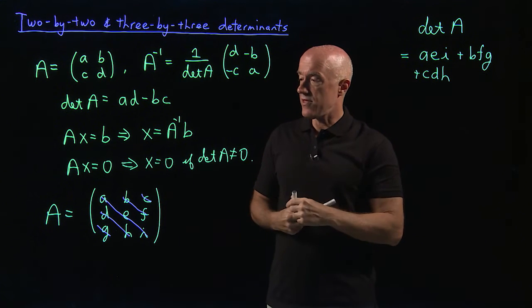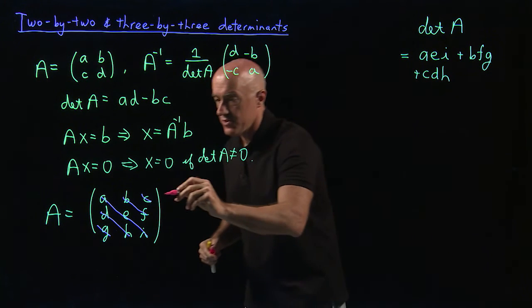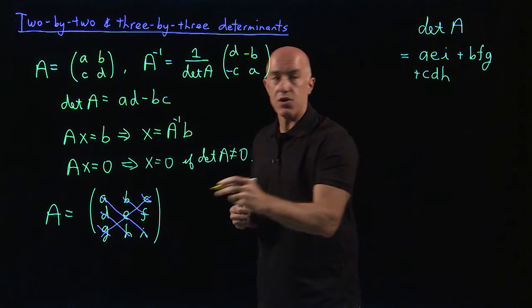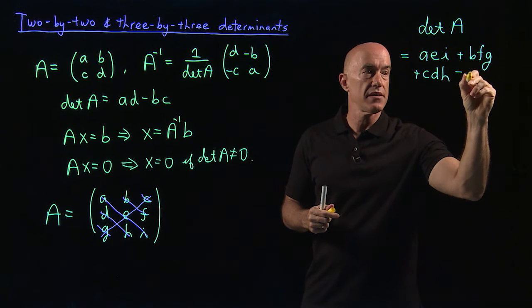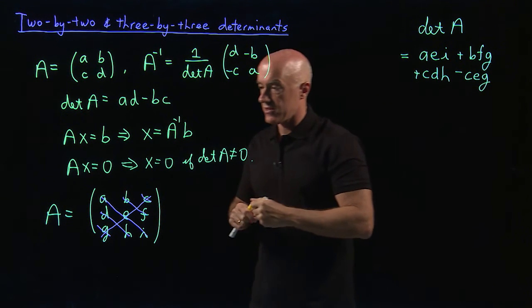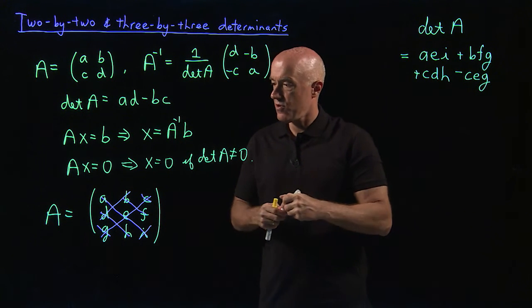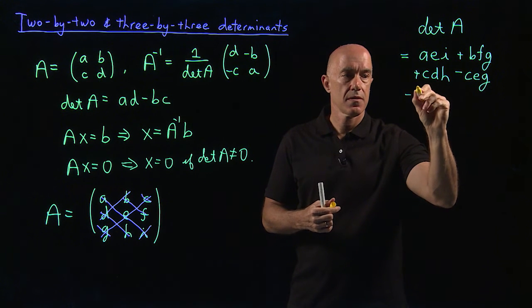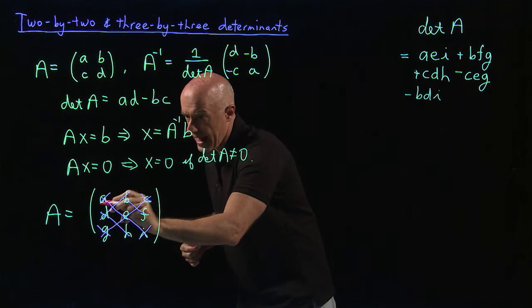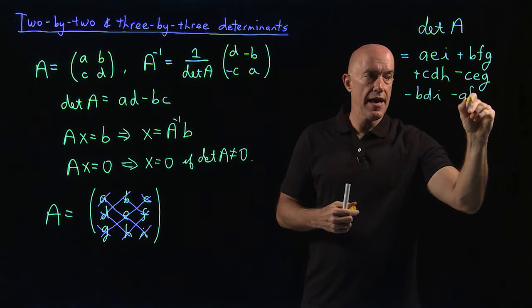That's three terms. And then there are three more terms with diagonals going in the other direction. So then we have this diagonal here, C, E, G. And this one, the diagonal is going in the other direction, gets minus sign, so minus C, E, G. And then we have two more of those diagonals. So we have B, D, I, so minus B, D, I. And one more, which would be A, F, H. So minus A, F, H.